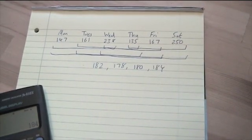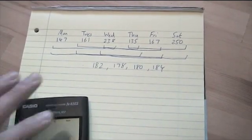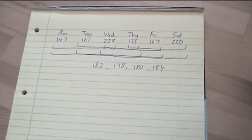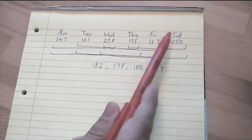You might be asked to plot moving averages on a graph. If you're asked to do that, you need to think carefully about the times that are shown. So here I've got Monday, Tuesday, Wednesday, Thursday, Friday, Saturday.